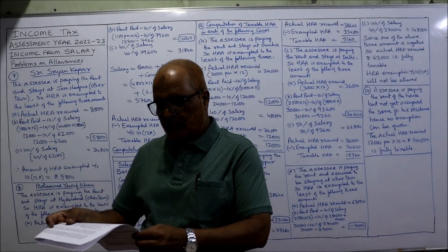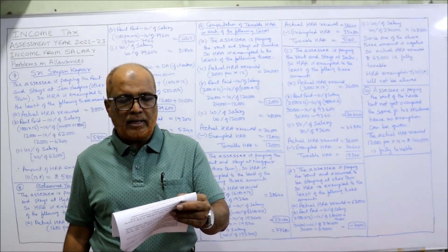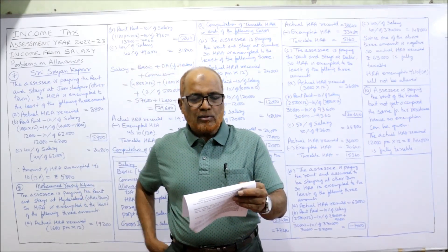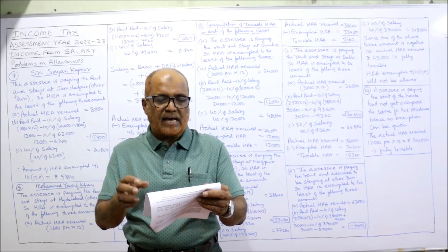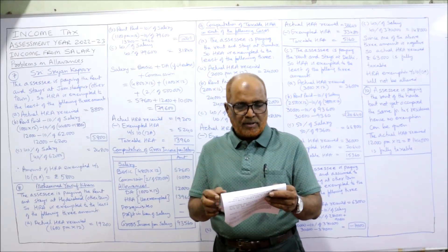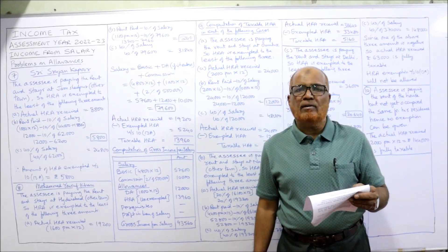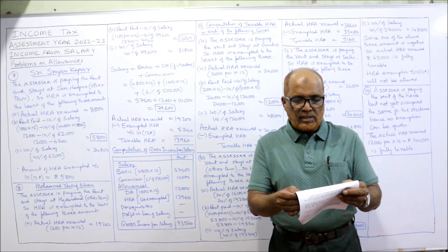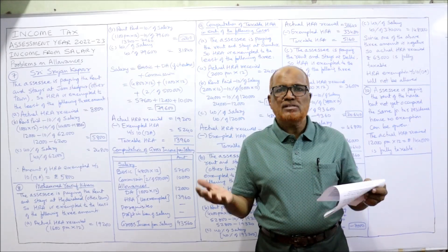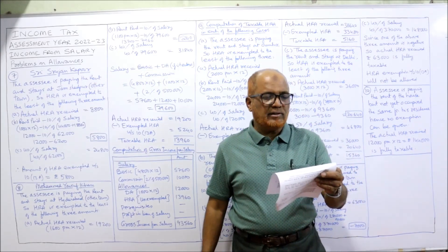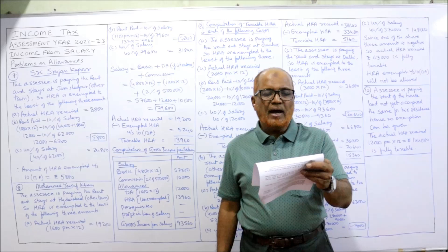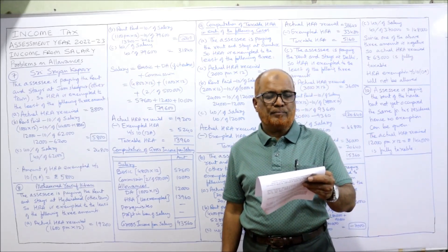Now see the seventh problem. Shri Srujan Kapoor is an employee of a limited company at Jamshedpur, in receipt of Rs 44,000 as basic, Rs 18,000 as dearness allowance forming part of salary for all retirement benefits — that means DA is entering for retirement benefit — Rs 6,000 as city compensatory allowance (CCA), Rs 8,800 as accommodation allowance (house rent allowance), and Rs 13,000 as entertainment allowance. He is paying a monthly rent of Rs 1,000 and electricity bill of Rs 300 per month.